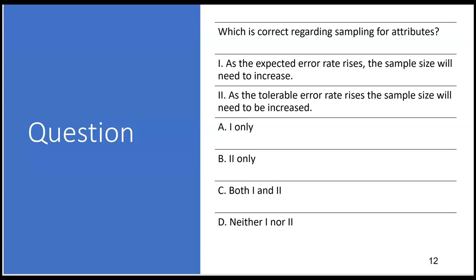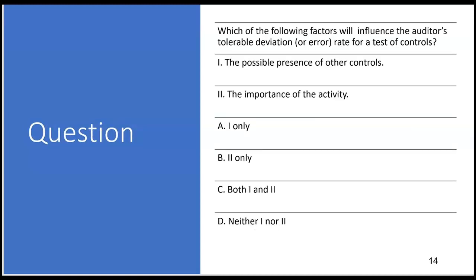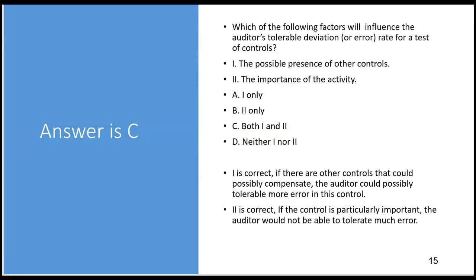Practice question: Which is correct regarding sampling for attributes? One — as the expected error rate rises, the sample size will need to increase. Yes: if we originally thought 2% error and now we think 3%, we'll need a bigger sample. Two — as the tolerable error rate rises, the sample size will need to be increased. No: if the auditor can tolerate more error, you don't need to look at as much sample, so the sample size could decrease. Statement one is correct but two is wrong — the answer is A. Regarding what influences the tolerable deviation rate: the possible presence of other controls and the importance of the activity — both are correct, answer C.